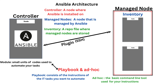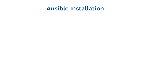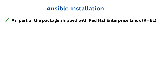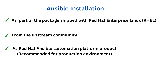The Ansible software can be obtained in three different ways: first, as part of the package shipped with Red Hat Enterprise Linux starting from RHEL 9 in the upstream repository; second, from the upstream community; and third, as the Red Hat Ansible Automation Platform product.